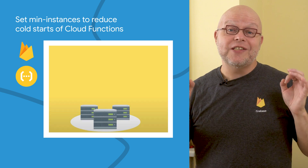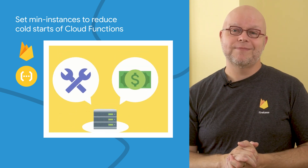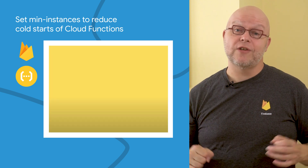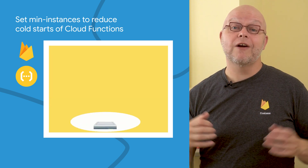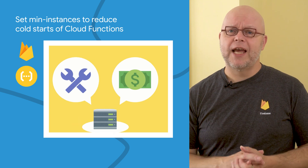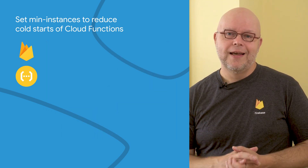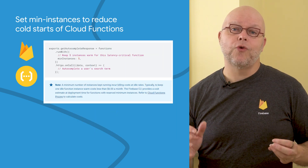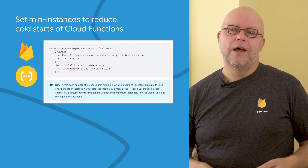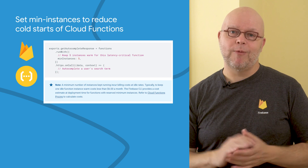Cloud Functions scales its resource usage based on the number of incoming requests. This means that it can scale down to zero usage and zero costs when there are no requests coming in. But starting a new resource takes some time, and your visitors may notice this so-called cold start. You can now control the scaling behavior of Cloud Functions through code. To reduce the number of cold starts, you can set a minimum number of instances.